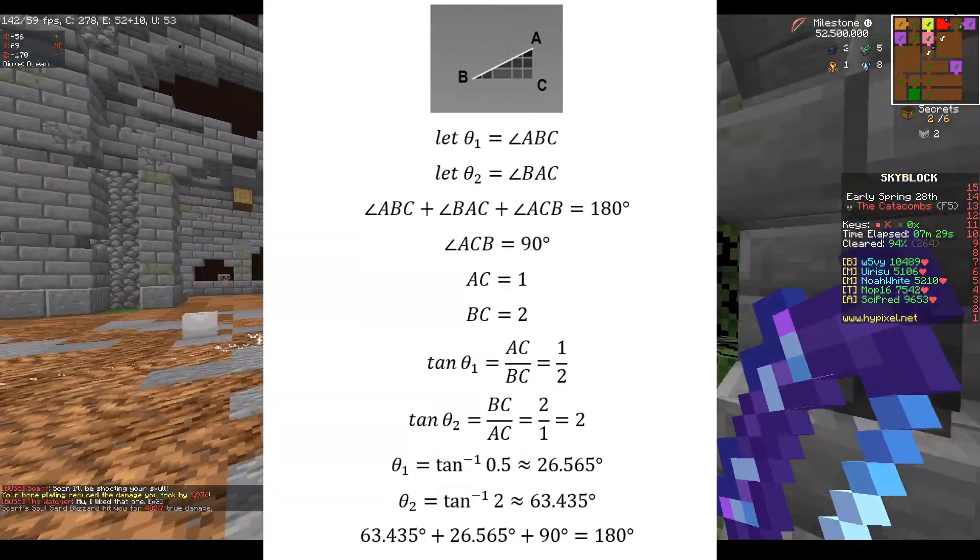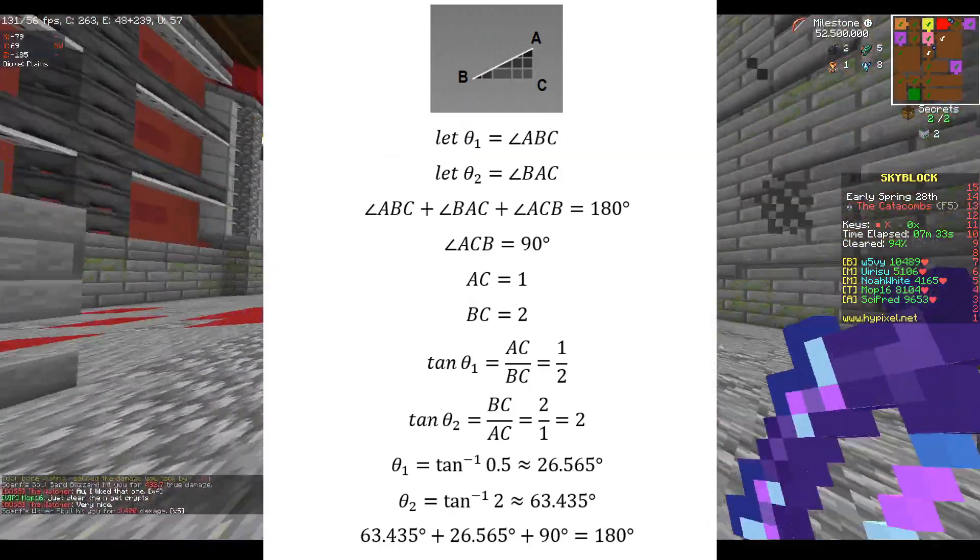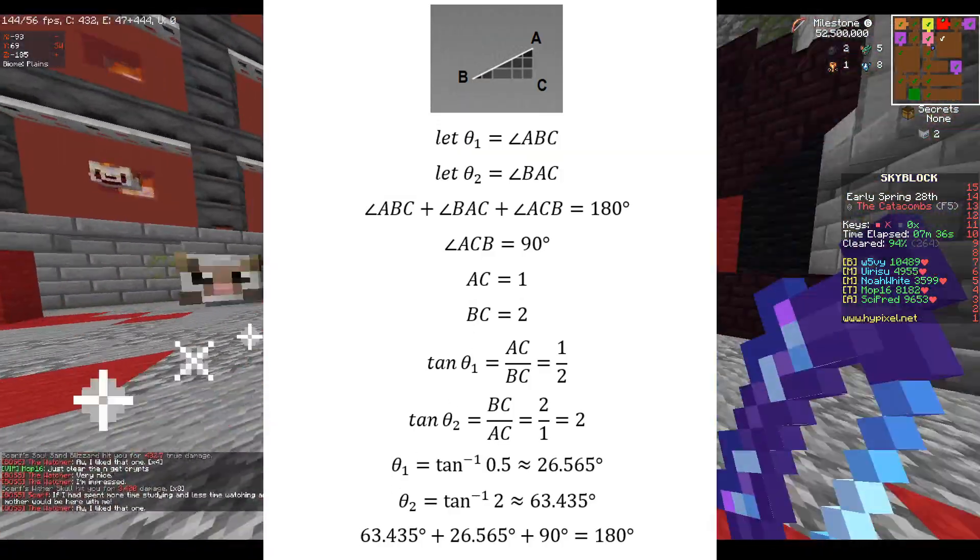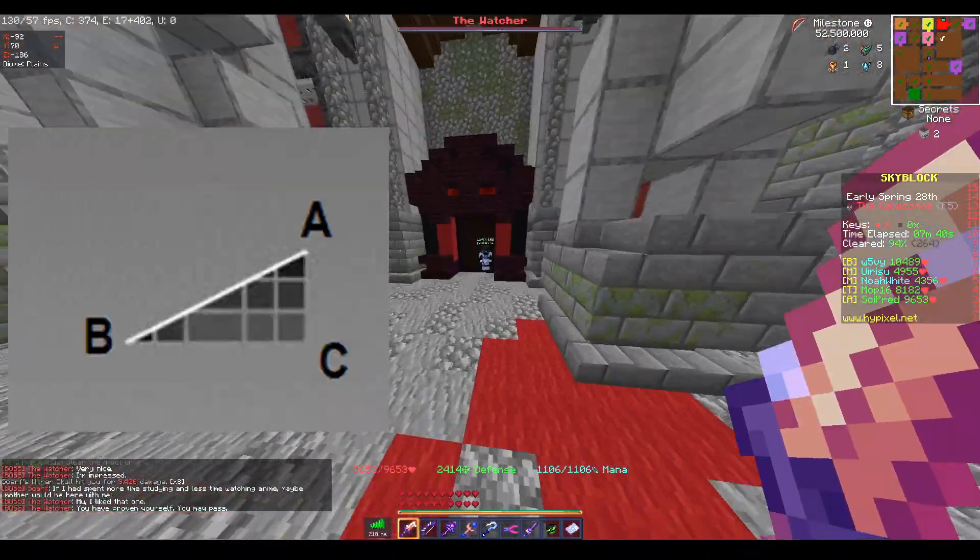This is the mathematics used to calculate both of the unknown angles of the slope. It may look intimidating at first, but I'll break this down step by step in the most general way possible. The slope is a triangle.